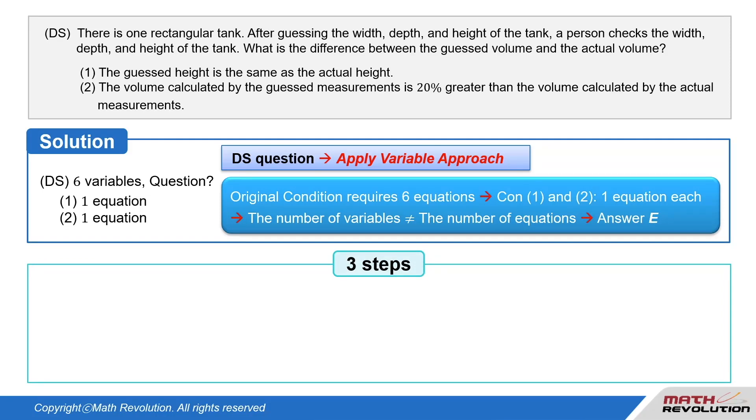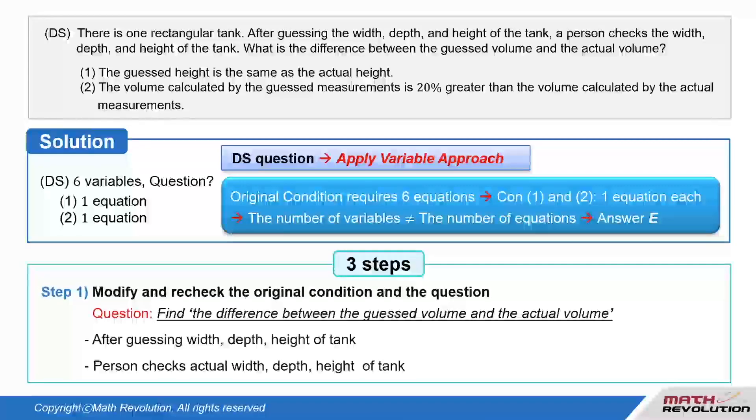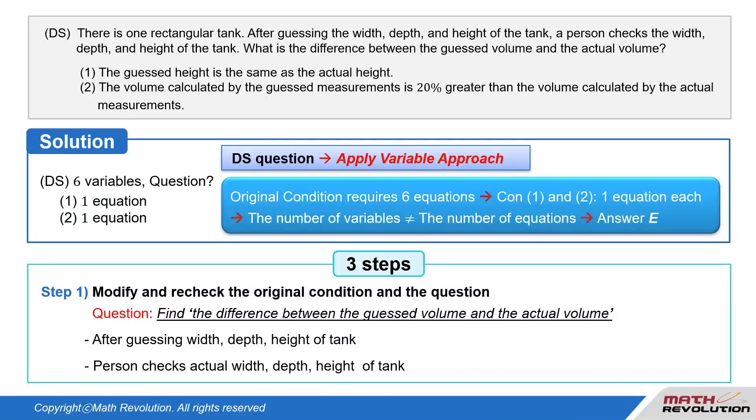Let's apply the three steps suggested previously. Follow the first step of the variable approach by modifying and rechecking the original condition and the question. We have to find the difference between the guessed volume and the actual volume if after guessing the width, depth, and height of the tank, a person checks the actual width, depth, and height of the tank.